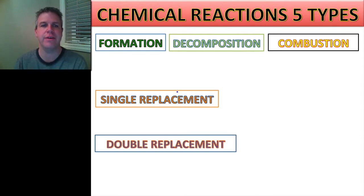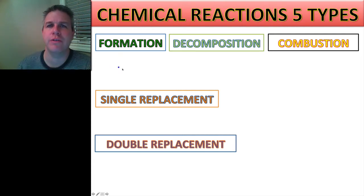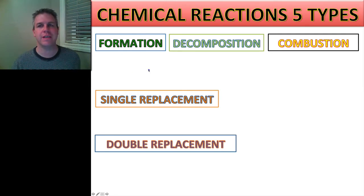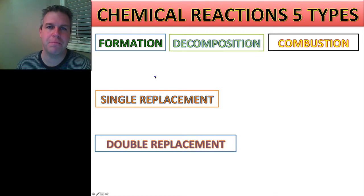We're going to look at how these all work together to create reactions. But before we do that, we're going to look at five different types of chemical reactions. I just have them all listed here: formation, decomposition, combustion, single replacement, and double replacement. What I'm going to do is diagram for you exactly what they all mean.